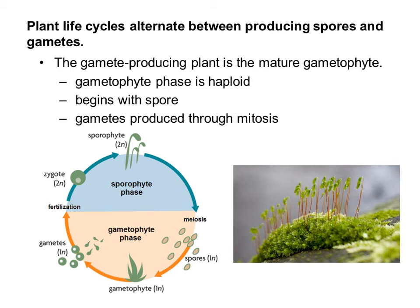Gametes are produced through mitosis, but mitosis keeps the number the same. So we start with 1N haploid and end with 1N haploid. When fertilization occurs, that's when we increase the number from 1N to 2N, and the process starts all over.